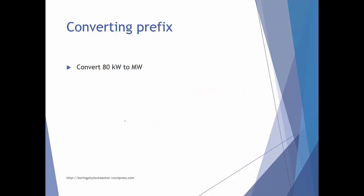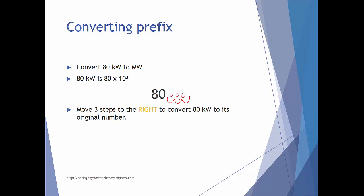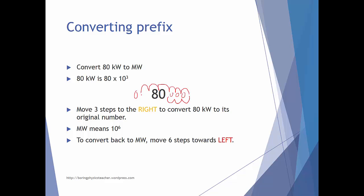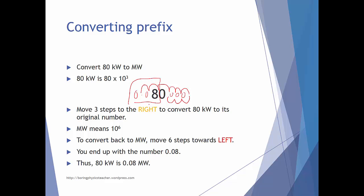The last example is converting 80 kilowatts into megawatts. Kilo is 10 to the power 3, so move three places to the right — one, two, three — giving 80,000. Mega is 10 to the power 6, so move six places to the left — one, two, three, four, five, six — leaving 0.08. So 80 kilowatts equals 0.08 megawatts.